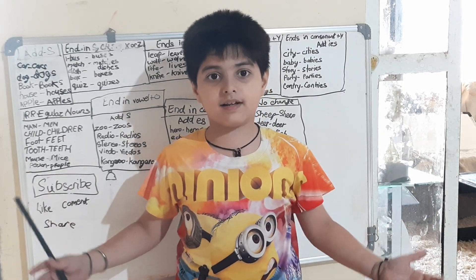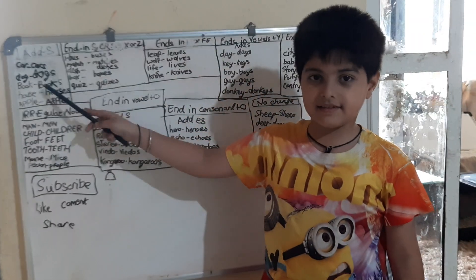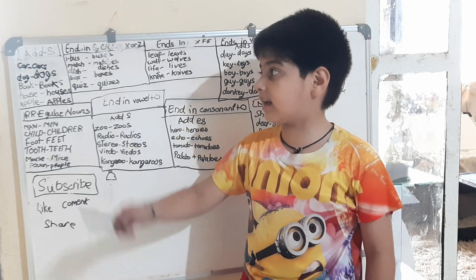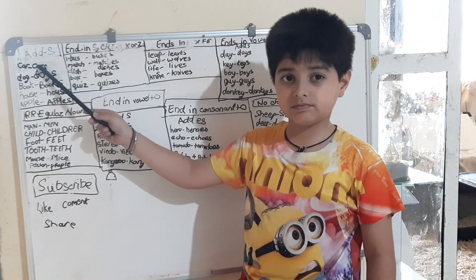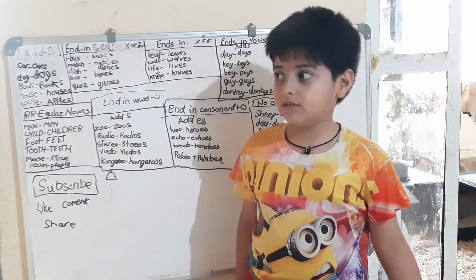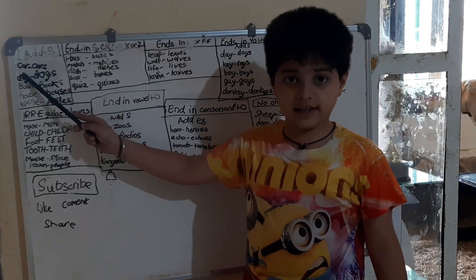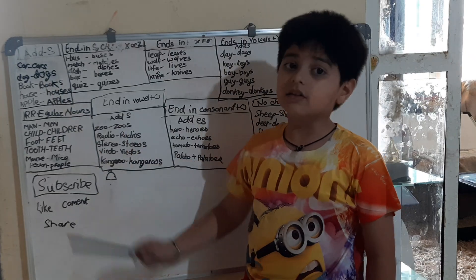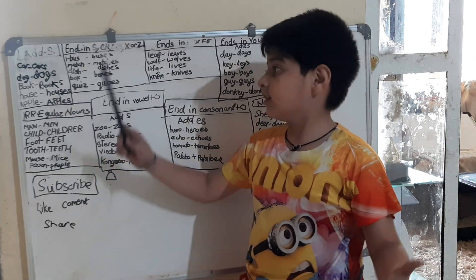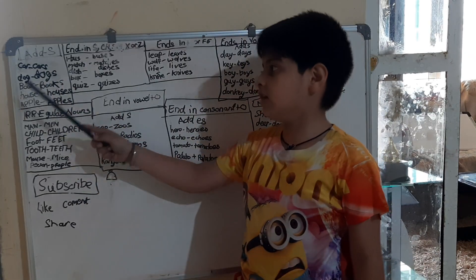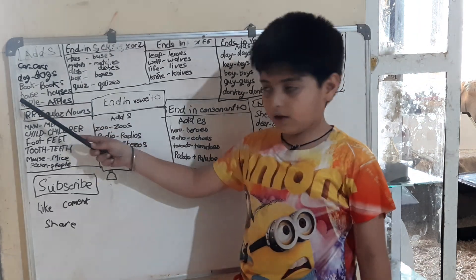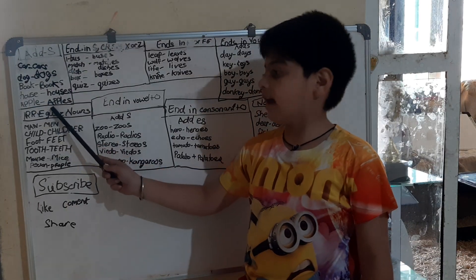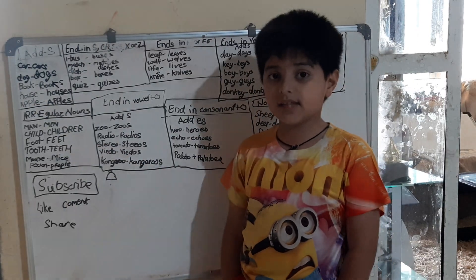So the first rule is to add S. It should be a common noun, then we will add S, and it should become a plural noun. Let's take an example: car becomes cars. Same like this — dog becomes dogs, book becomes books, house becomes houses, apple becomes apples.